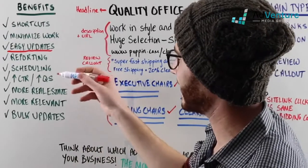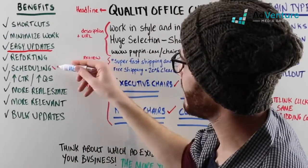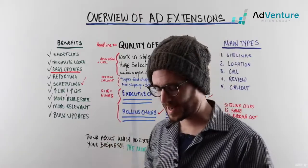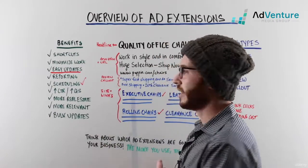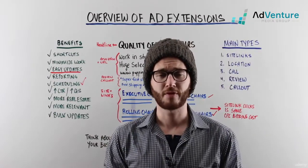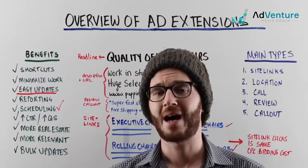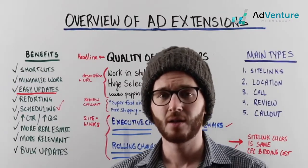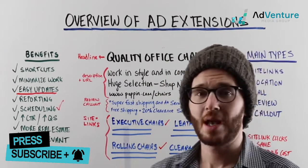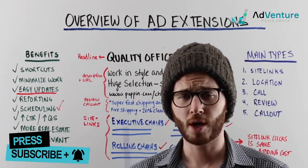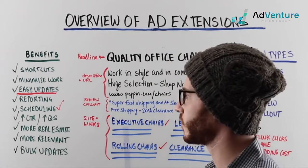Most ad extensions have scheduling features. You're able to schedule your ad extensions to start and end at certain times. For example, if you're running a sale — a classic example — or a promotion, or you want to highlight an event over a specific period, you could use a callout extension and schedule it to run only between certain dates. That's a very helpful and useful feature.